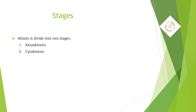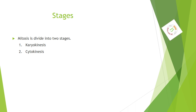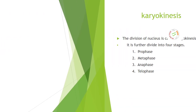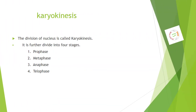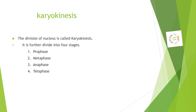Stages. Mitosis is divided into two stages: 1. Karyokinesis and 2. Cytokinesis. Karyokinesis: the division of the nucleus is called karyokinesis. It is further divided into four stages.